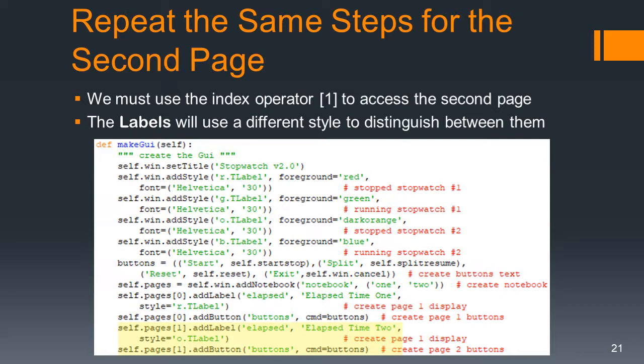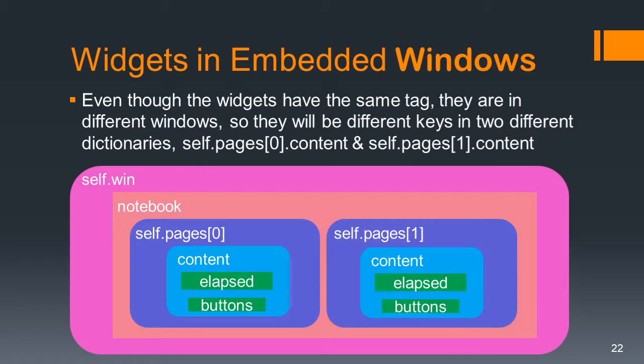Each label is going to use a different style, making it easy for the user to see which stopwatch is active. Even though the widgets have the same tag, they are in different windows and will be different keys in two different dictionaries. The reason we use the same tag is to make the code a lot simpler to write. So self.pages[0] has a content dictionary with keys 'elapsed' and 'buttons', and the same for self.pages[1], both contained in the notebook, which is contained in self.win.